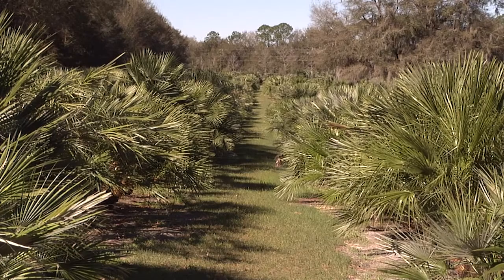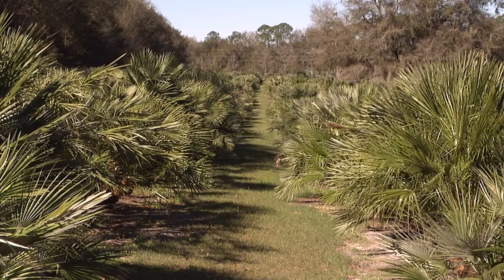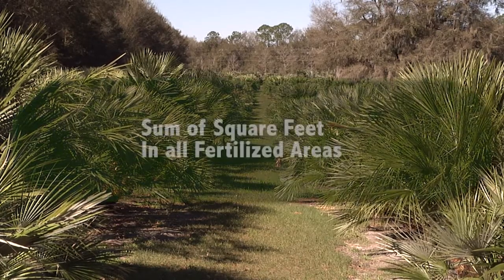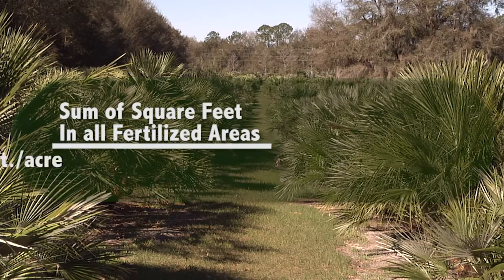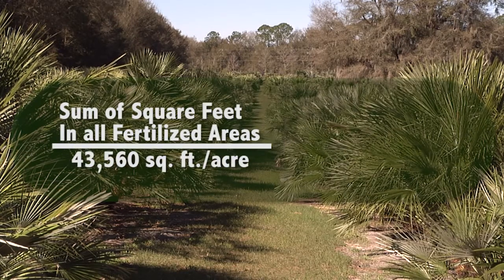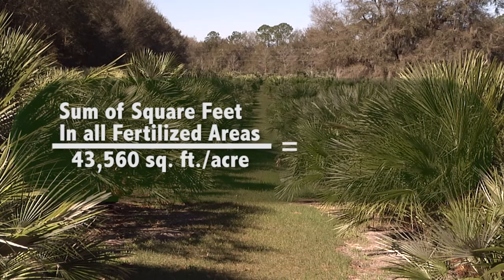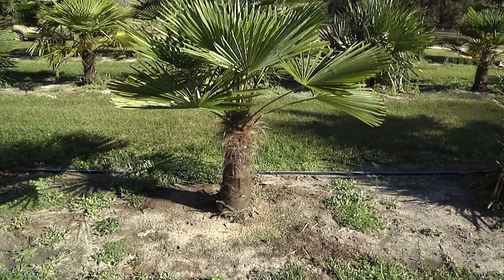The size or square footage of the small areas that receive fertilizer are summed and divided by 43,560 square feet per acre to calculate how many acres of land were fertilized.